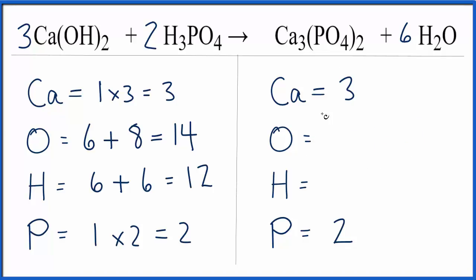So let's update our oxygens. We have two times four, that's eight. Plus the one times the six, that's six. And that equals 14, which is really nice, because the oxygens are balanced out.